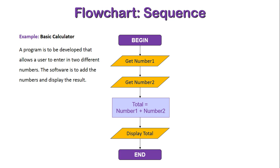I hope this has given you an understanding of basically what sequence is as a control structure and how it is displayed in both pseudocode and flowchart formats. Essentially, it is the logical organization of the steps within a program, ensuring they make sense in order to execute their function and display the designated output that a user is wanting to see.